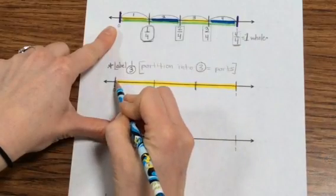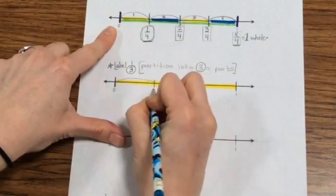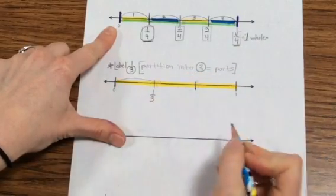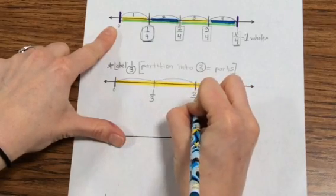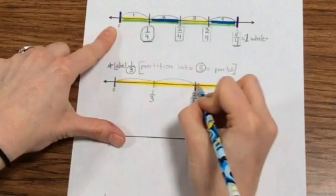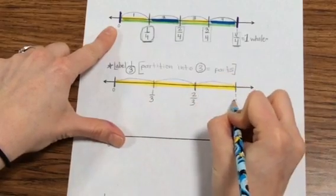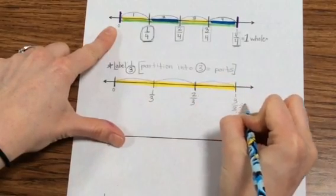Now this is one out of three equal parts, or one-third out of the whole. This is two out of three equal parts, or two-thirds. And this is three out of three equal parts, or one whole.